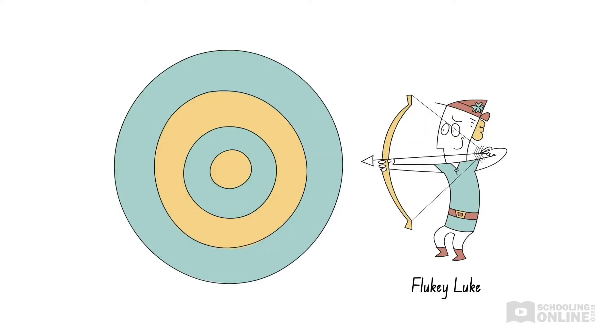On the other hand, Fluky Luke demonstrates a very large random error. His arrows might hit above, below or to the side of the target. He might hit close to the bullseye or he might miss. Fluky Luke is so unpredictable that he cannot shoot consistently, so he is not a reliable archer.